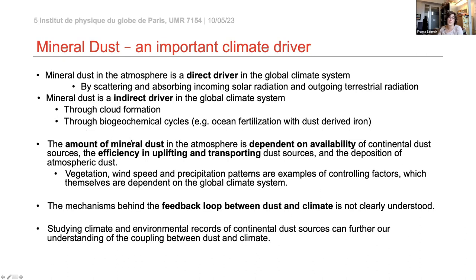The amount of mineral dust in the atmosphere depends on the availability of continental dust sources, the efficiency of uplift and transport, and eventual deposition. Vegetation, wind speed, and precipitation are all controlling factors. These factors are themselves dependent on the global climate system, so there's a feedback loop between dust and climate. The mechanisms of this feedback are not clearly understood today and are worth studying.